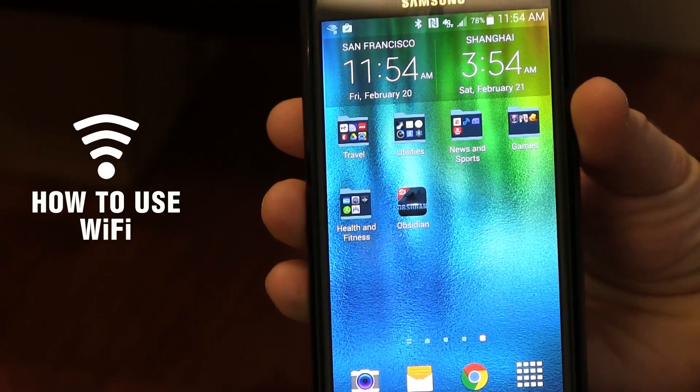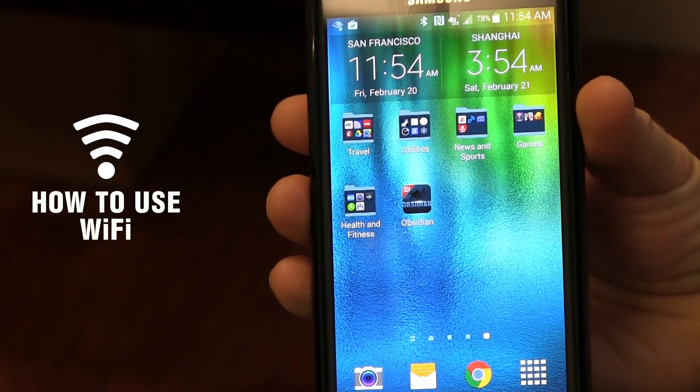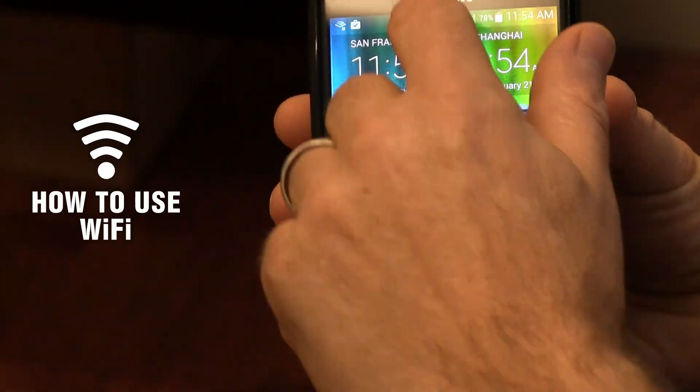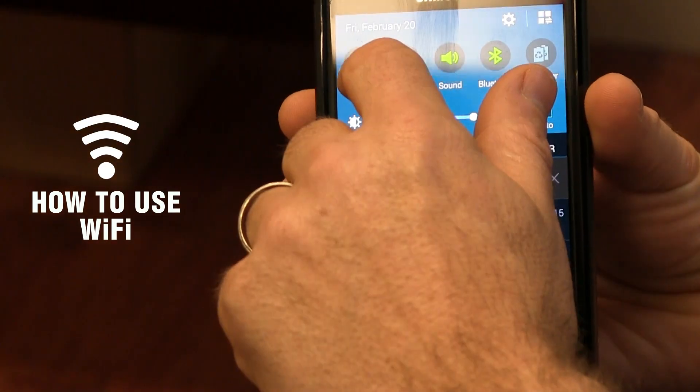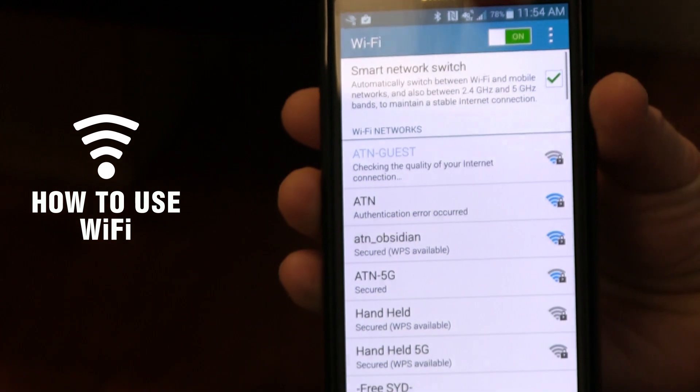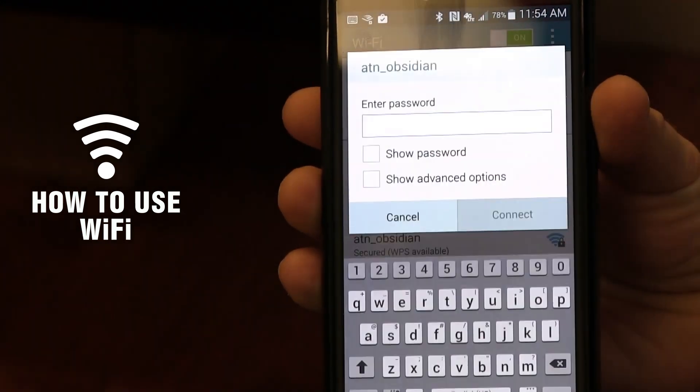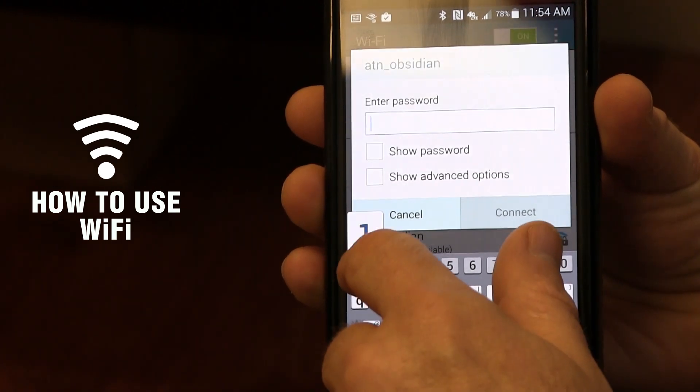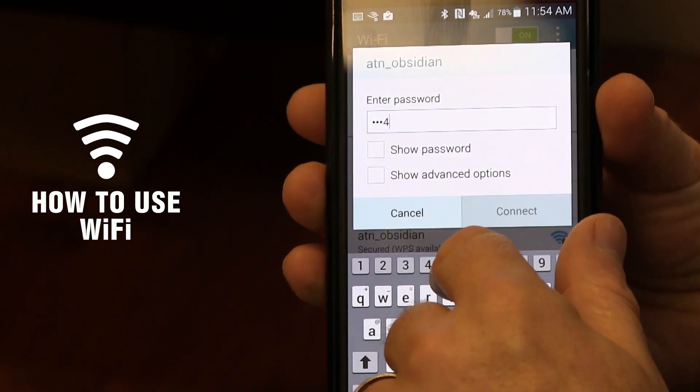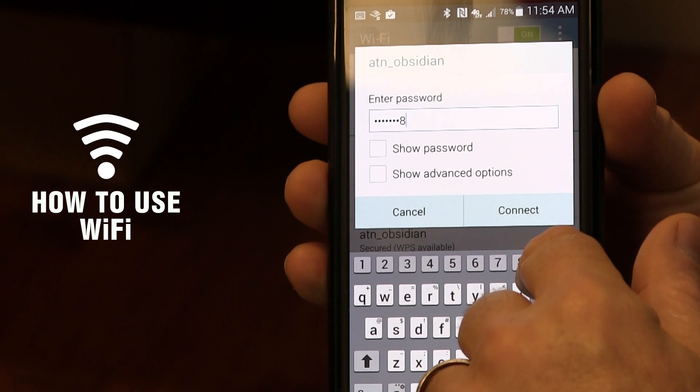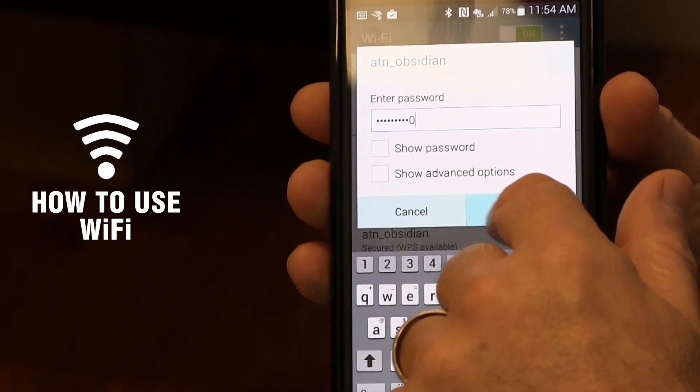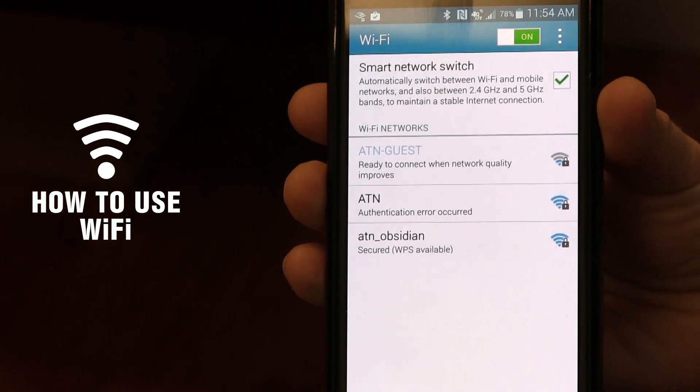Once you've activated the Wi-Fi feature on your X-Sight, go to your portable device, and find that Wi-Fi network called ATN underscore Obsidian. Connect to it by entering the password, which is located in your X-Sight Wi-Fi menu. In this case, the default is one through zero, and connect.